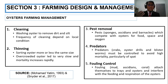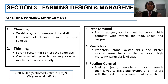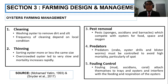Now, oyster farming management — there are five management practices. Number one is cleaning: the oyster must be washed regularly and frequently to remove dirt and salt; the frequency depends on local conditions. Second is thinning — it is a type of sorting, sorting oysters to the same size, because overcrowding can lead to very slow growth and increased mortality.